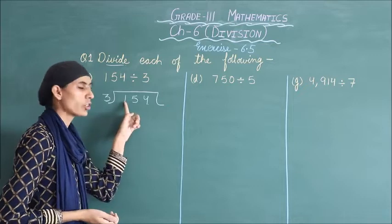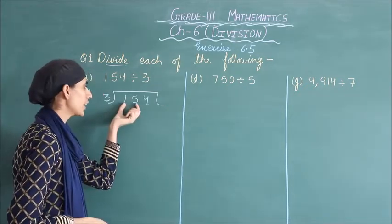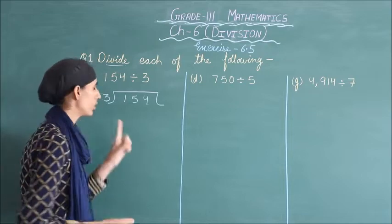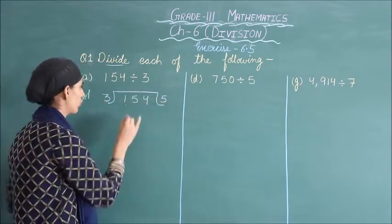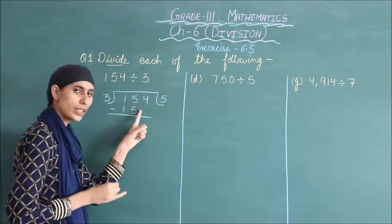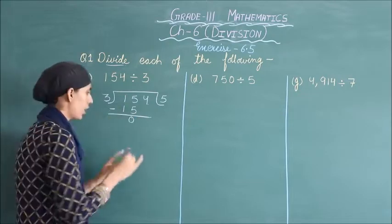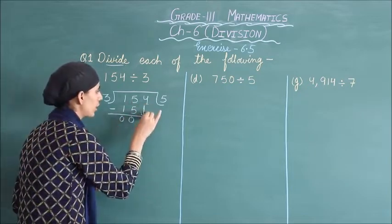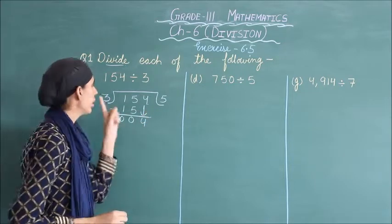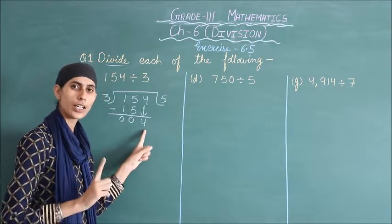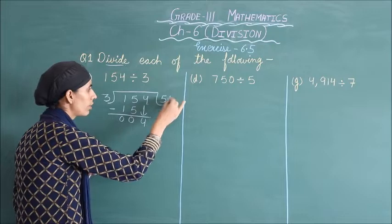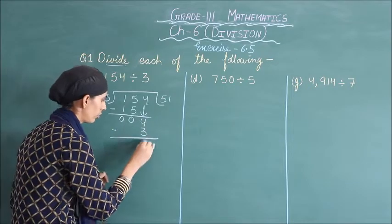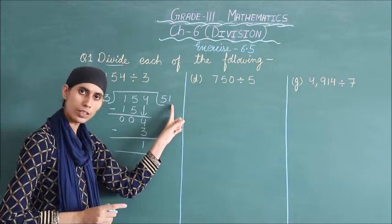Check the first digit — 1 is smaller than 3, so we take two digits: 15. In the 3 times table, 15 comes at 5 times: 3 fives are 15. Subtract: 15 minus 15 is 0. Next digit is 4, so we bring down 4. In the 3 times table, 4 doesn't appear, so we take the closest: 3 ones are 3. Subtract: 4 minus 3 is 1. So your quotient is 51 and your remainder is 1.